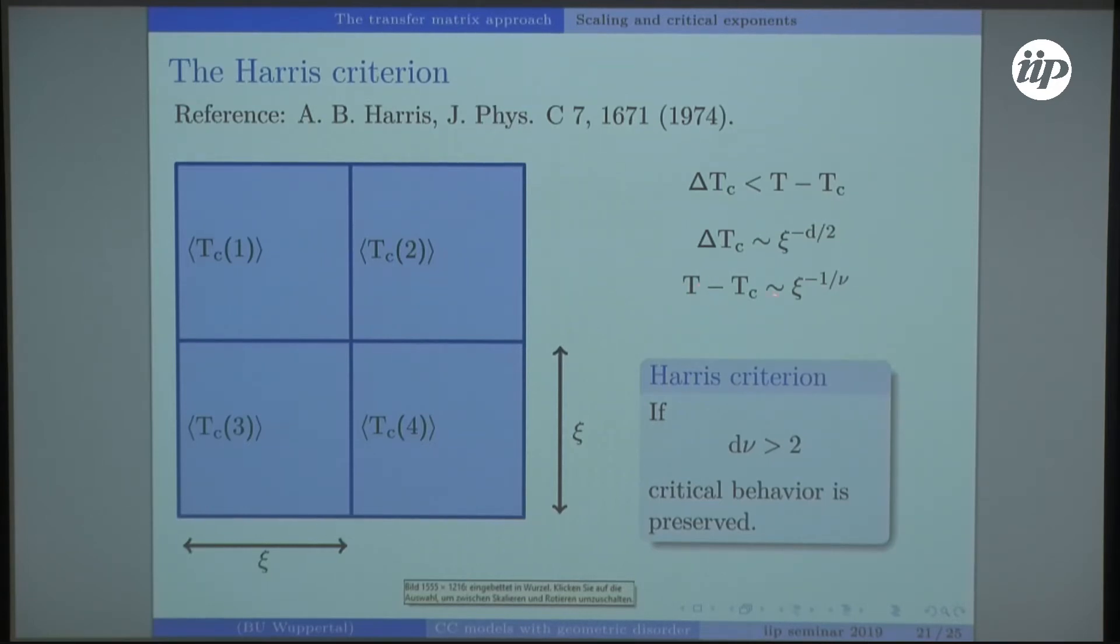From the critical behavior we know that this side behaves like the correlation length to the minus 1/ν. If we plug both in here, we end up with the Harris criterion, and if this one is fulfilled, the transition will be preserved, so there is no change of universality class.